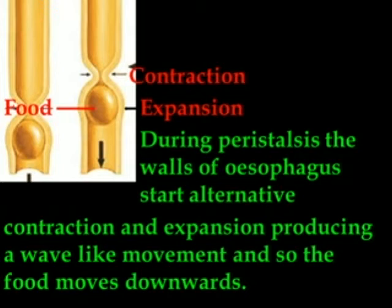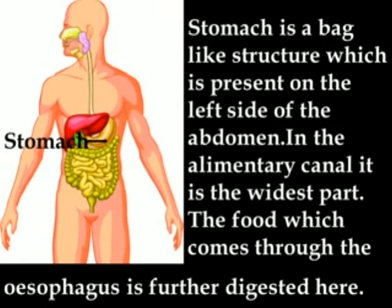Now observe the diagram showing peristalsis in the esophagus. The stomach is a bag-like structure present on the left side of the abdomen. In the alimentary canal, it is the widest part. The food which comes through the esophagus is further digested here. Mainly proteins are digested in the stomach.